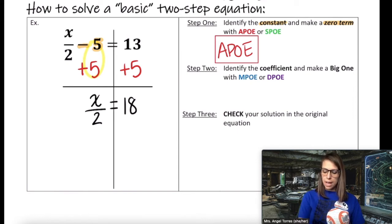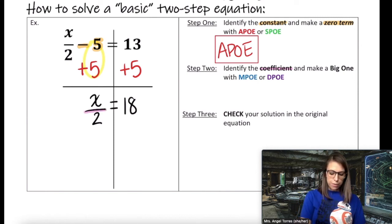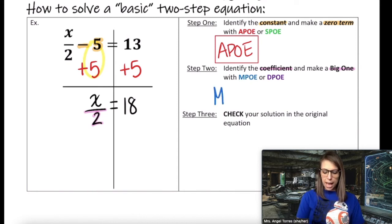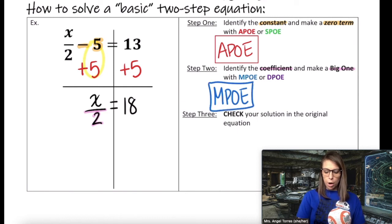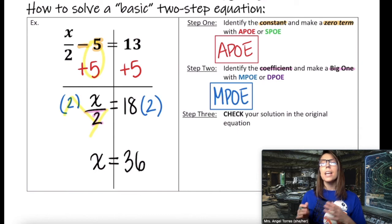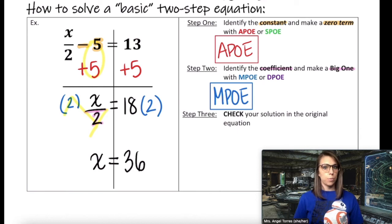Step two: identify the coefficient — the part attached to x. In this case, my coefficient is that I'm dividing by 2. Make a big one using MPO or DPO. If I'm already dividing, I wouldn't divide again, so we're going to use MPO to create our big one. Multiply both sides — remember, multiplication happens in the numerator. 2 over 2 makes a big one, and 1x leaves x by itself, so x equals 36. Now x is totally isolated, meaning we can move on to step three: checking our solution in the original equation.